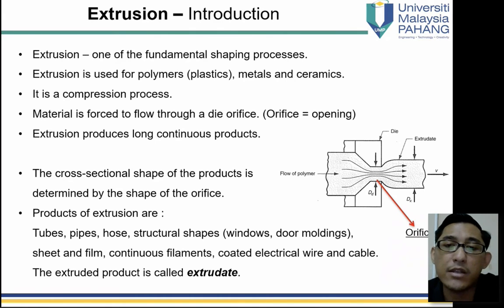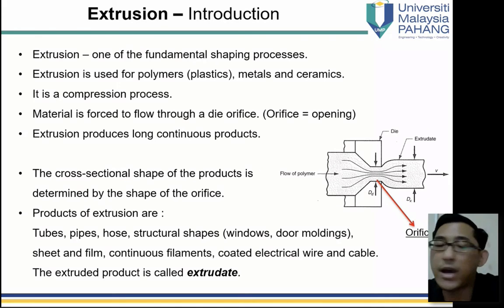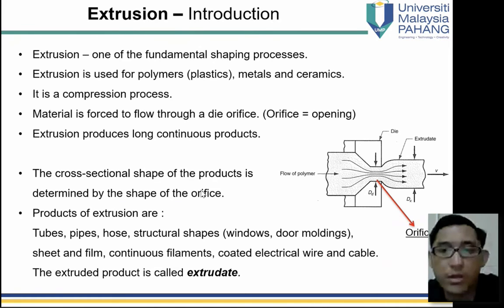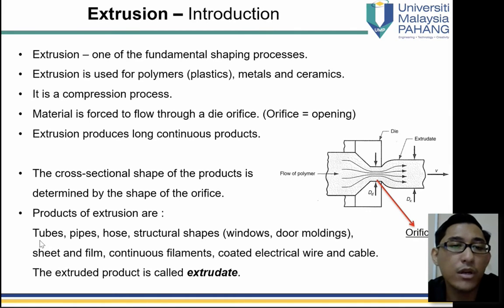That is the difference from injection. Injection produces one product per cycle, but extrusion produces a continuous product — connected continuously, like wire or a long water pipe. The cross-section shape of the product is determined by the shape of the die orifice. Products of extrusion are typically long objects where the cross-section is uniform and constant — that is the product from extrusion.